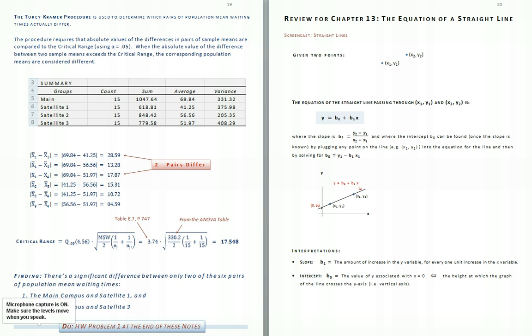We then compute the critical range. And again, the q value will be obtained using the table in the back of the textbook, page 747, or from a q table you can pick up on the net.